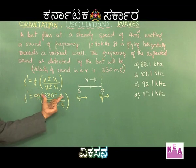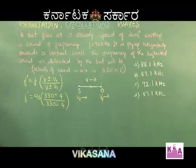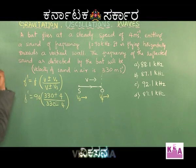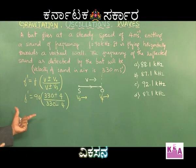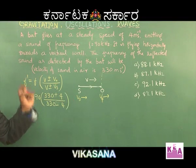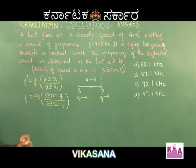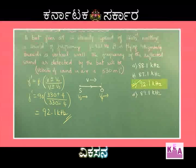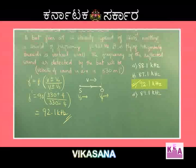The problem is finished. It is (330 + 4) / (330 − 4), which is greater than 1. So 90 multiplied by a number greater than 1 must give something more than 90. There is only one option which is greater than 90, that is 92.1 kHz. Since the numerator is greater than the denominator, the correct frequency is more than 90. So the answer is 92.1 kHz, and C is the correct answer.